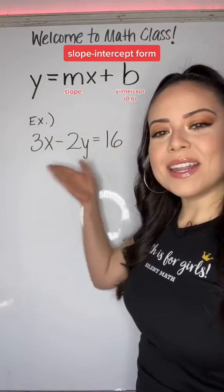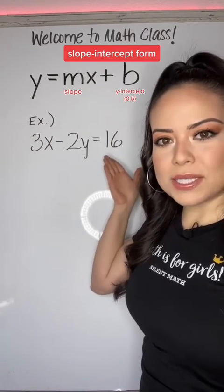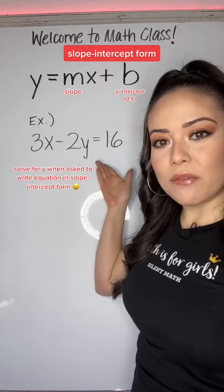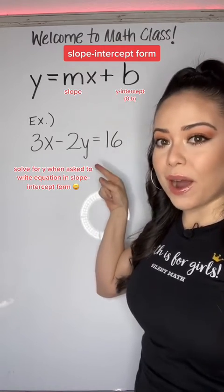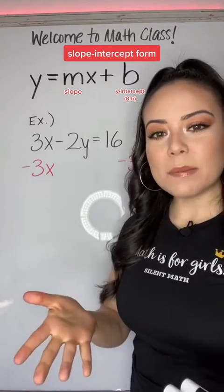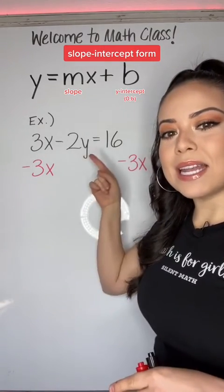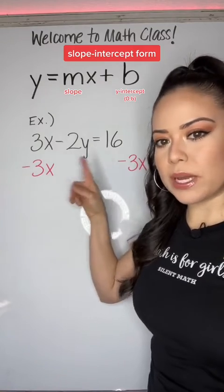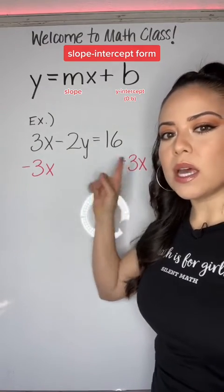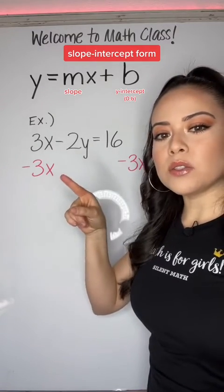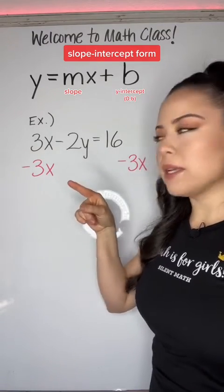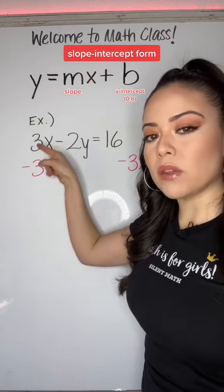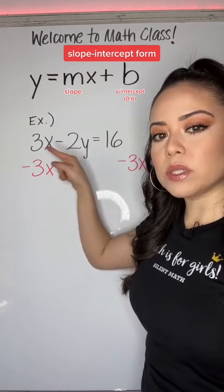Now look at this equation for example. We want to write this in slope-intercept form, which means we need to solve for y. The first step to isolating the negative 2y is to subtract 3x from both sides. The reason I know to subtract it away is because 3x is positive on the left side of the equal sign.